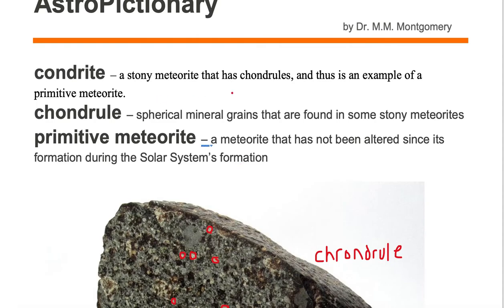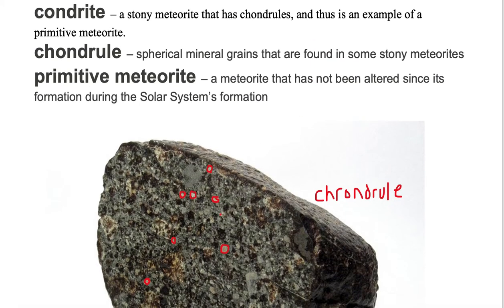The chondrules are in meteorites that are primitive. What's a primitive meteorite? A primitive meteorite is a meteorite that has not been altered since its formation during the solar system's formation. Therefore, a chondrite is a stony meteorite that has these chondrules and thus is an example of a primitive meteorite.